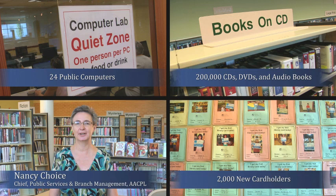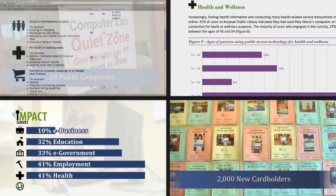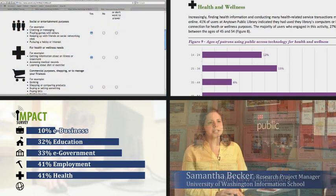In Chapter 6, you'll notice that patron activities are divided into seven domains of use. These domains were developed by the U.S. Impact Study as key areas of patron usage that align with the issues tackled by key stakeholders and funders.